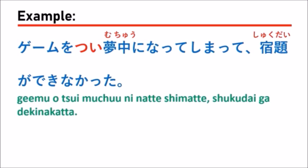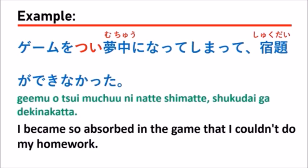The next example: ゲームをつい夢中になってしまって、宿題ができなかった。 Which means: 'I became so absorbed in the game that I couldn't do my homework.'